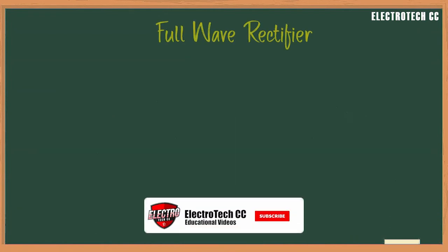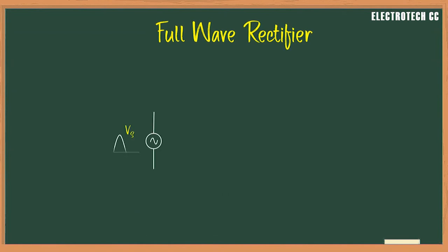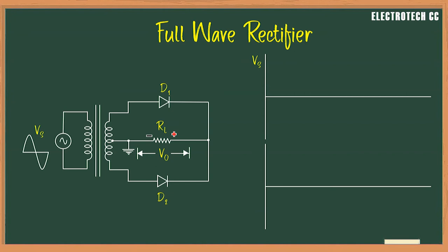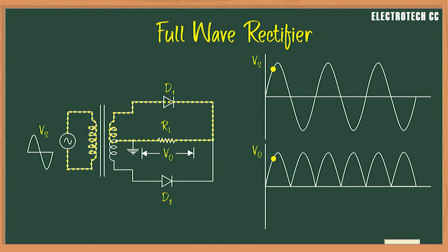Now let us discuss the full wave rectifier. In the full wave rectifier, the main AC power supply is connected to the load resistor through a transformer and two diodes. Both half cycles of the input are utilized with the help of two diodes working alternately. Use of a transformer is essential, and the center tap is usually taken as the ground or zero voltage reference point. In the positive half cycle, the input current is transferred to the output current with the help of the center tap transformer. The output current flows through diode D1 and resistive load RL in the clockwise direction, and the output voltage across RL equals the input voltage of the positive half cycle.